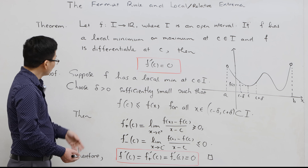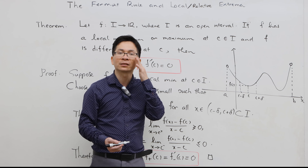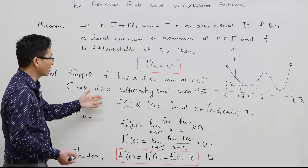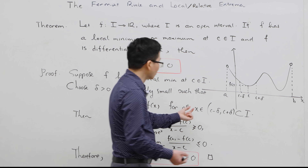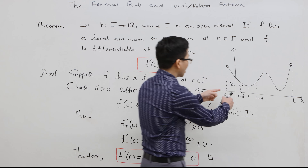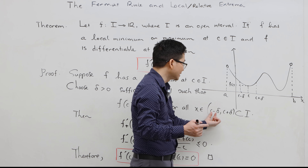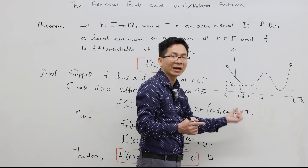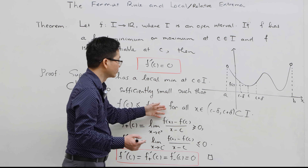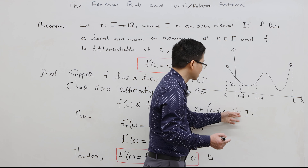We only focus on the case where f has a local minimum at c; the case of a local maximum is similar. What does it mean for f to have a local minimum at c? We can find delta greater than 0 such that on the interval from c minus delta to c plus delta, f(c) is the smallest value. Since I is an open interval, we can choose delta sufficiently small so that the entire interval from c minus delta to c plus delta is a subset of I, and f(c) ≤ f(x) for all x in that open interval.